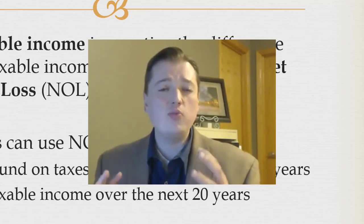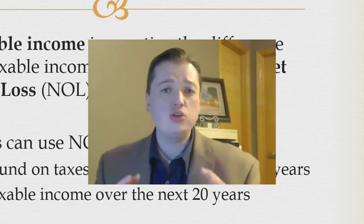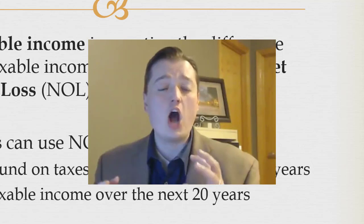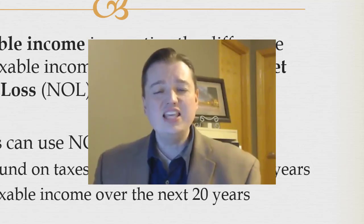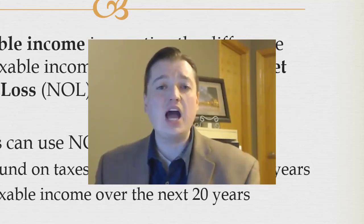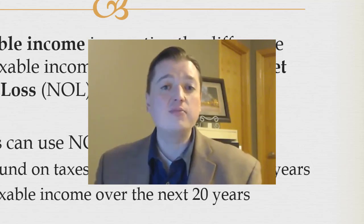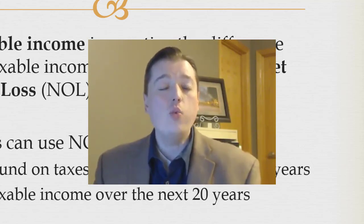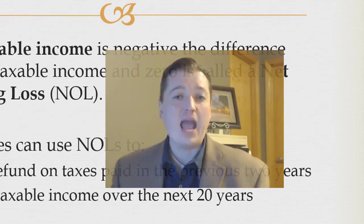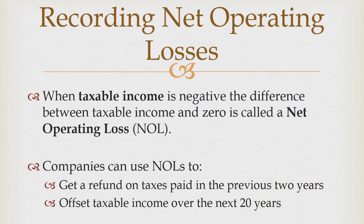The last topic we really need to introduce is what we call a net operating loss. This is what happens when our taxable income is negative and the government owes us a tax refund. The idea is that taxable income is negative, and that difference between the taxable income and zero is called a net operating loss.